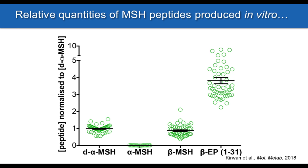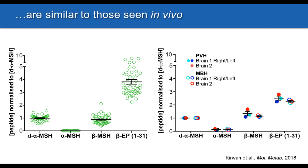The real surprise is that alpha-MSH, which is thought based on studies in mice to play the predominant role in regulating food intake, was produced at very low levels. To confirm this wasn't an artifact of our culture system, we took advantage of a local brain bank to obtain fresh samples of primary human brain tissue. When we performed the same quantitative mass spectrometry, we found essentially exactly the same result: desacetyl alpha-MSH and beta-MSH were produced at very similar quantities and at much higher quantities than the mature alpha-MSH. This suggests that beta-MSH likely plays a prominent role in human energy homeostasis, and that we need to rethink the central role ascribed to alpha-MSH.